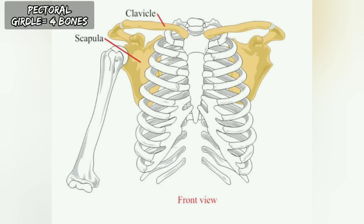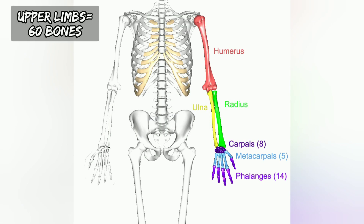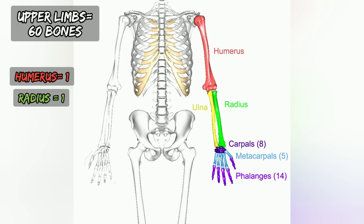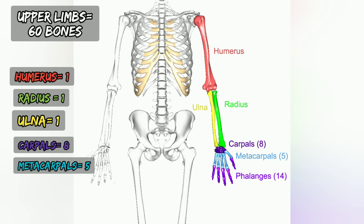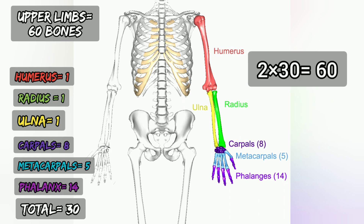Pectoral and shoulder: each side has 2 bones — one is the clavicle (collar bone) and one is the scapula. So two sides give 4 bones total. Upper limbs: there are a total of 60 bones, and each side has 30 bones. Each upper limb consists of 1 humerus, 1 radius, 1 ulna, 8 carpals, 5 metacarpals, and 14 phalanges. So one side is 30 bones, and two sides total 60 bones.